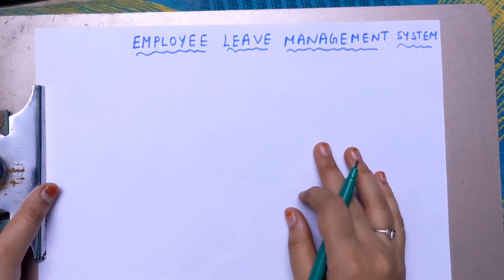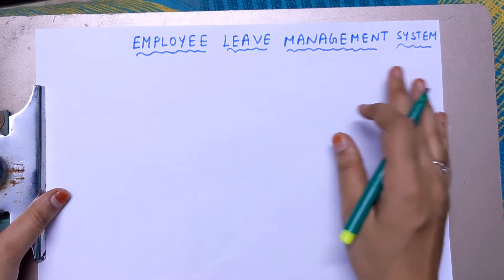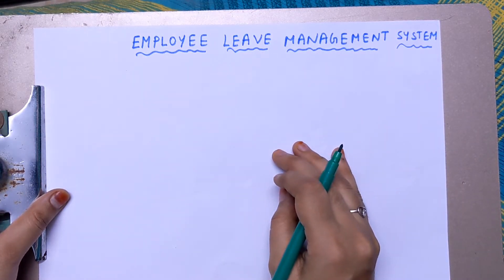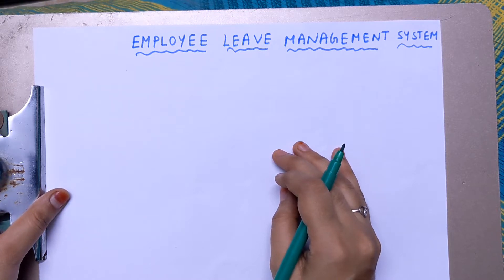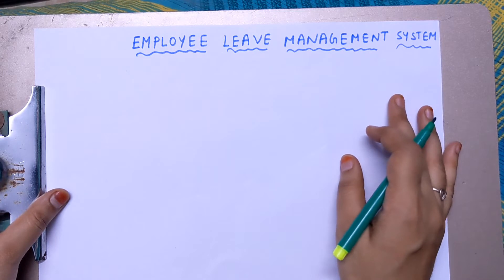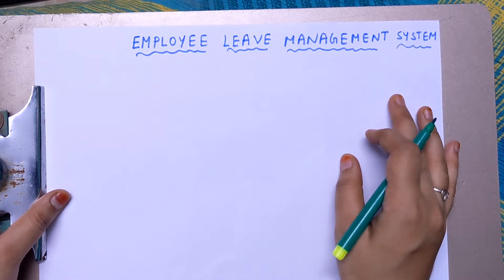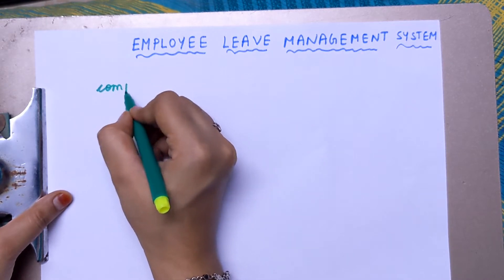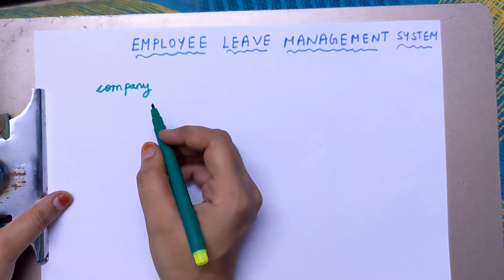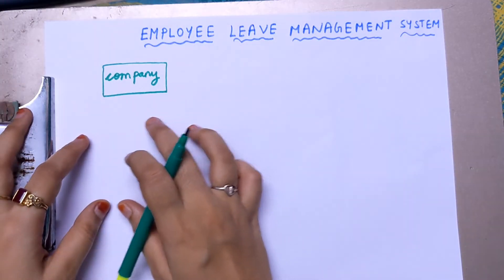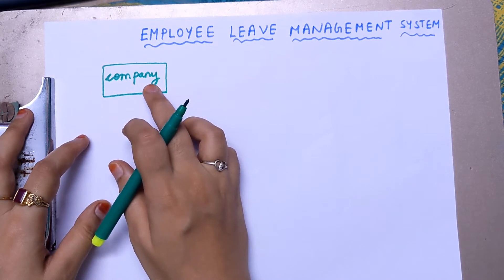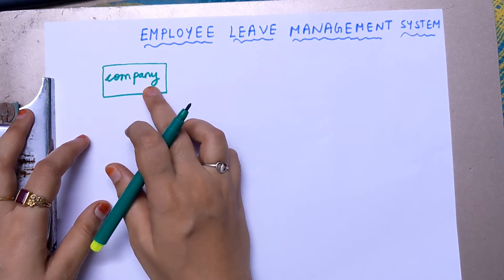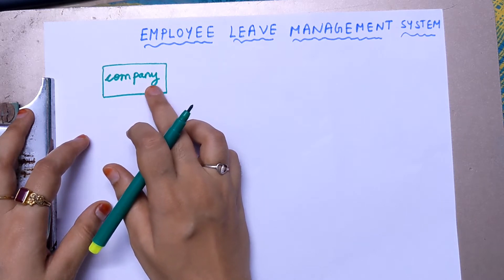In this video, let us learn to draw an ER diagram for an employee leave management system. The first step is to choose the entities. An entity is an object with physical or conceptual existence. Company is an important entity — it is a building you can touch, so it physically exists. We write it inside a rectangular box.